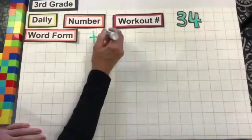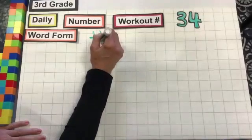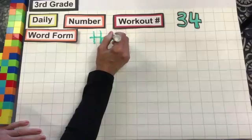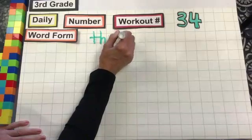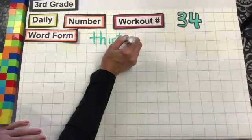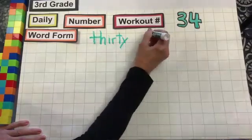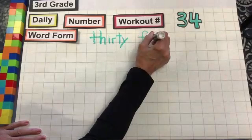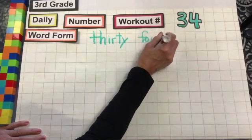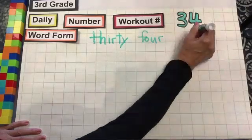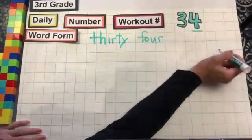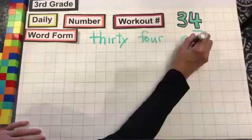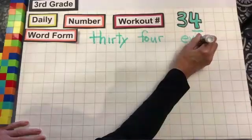34 — T-H-I-R-T-Y, F-O-U-R. And because it ends in a four, it is an even number.